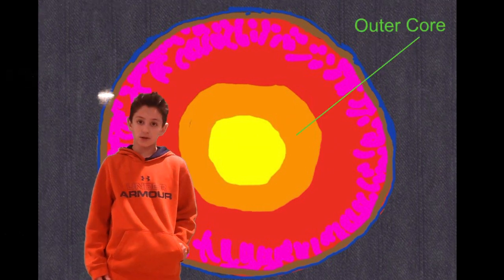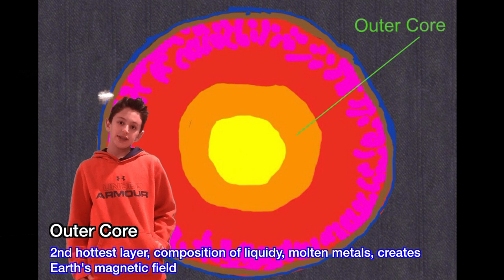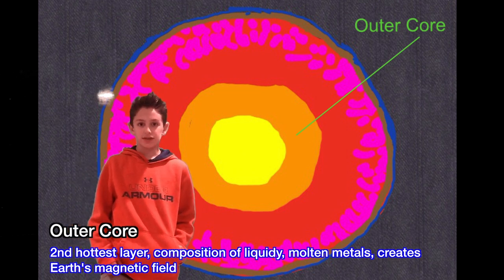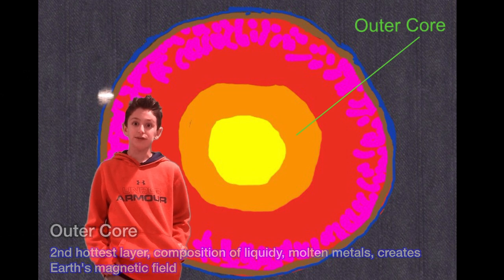The outer core, which is the layer that surrounds the inner core, takes up about 10% of the earth, is composed of molten metals, and creates earth's magnetic field.